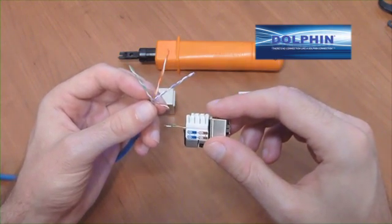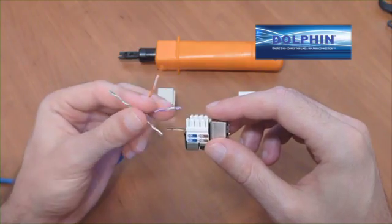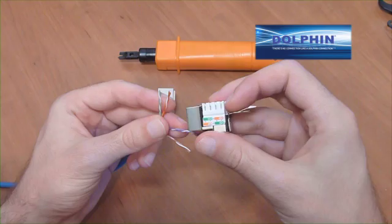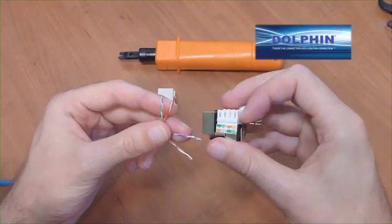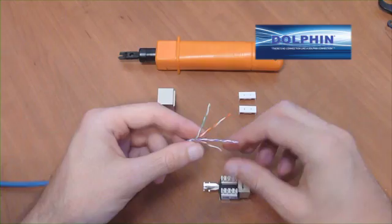Using the color coded chart seen in each connector, pull twisted pairs over to the color corresponding teeth inside of the canal and untwist just enough wire to position wires in the teeth from cable canal.